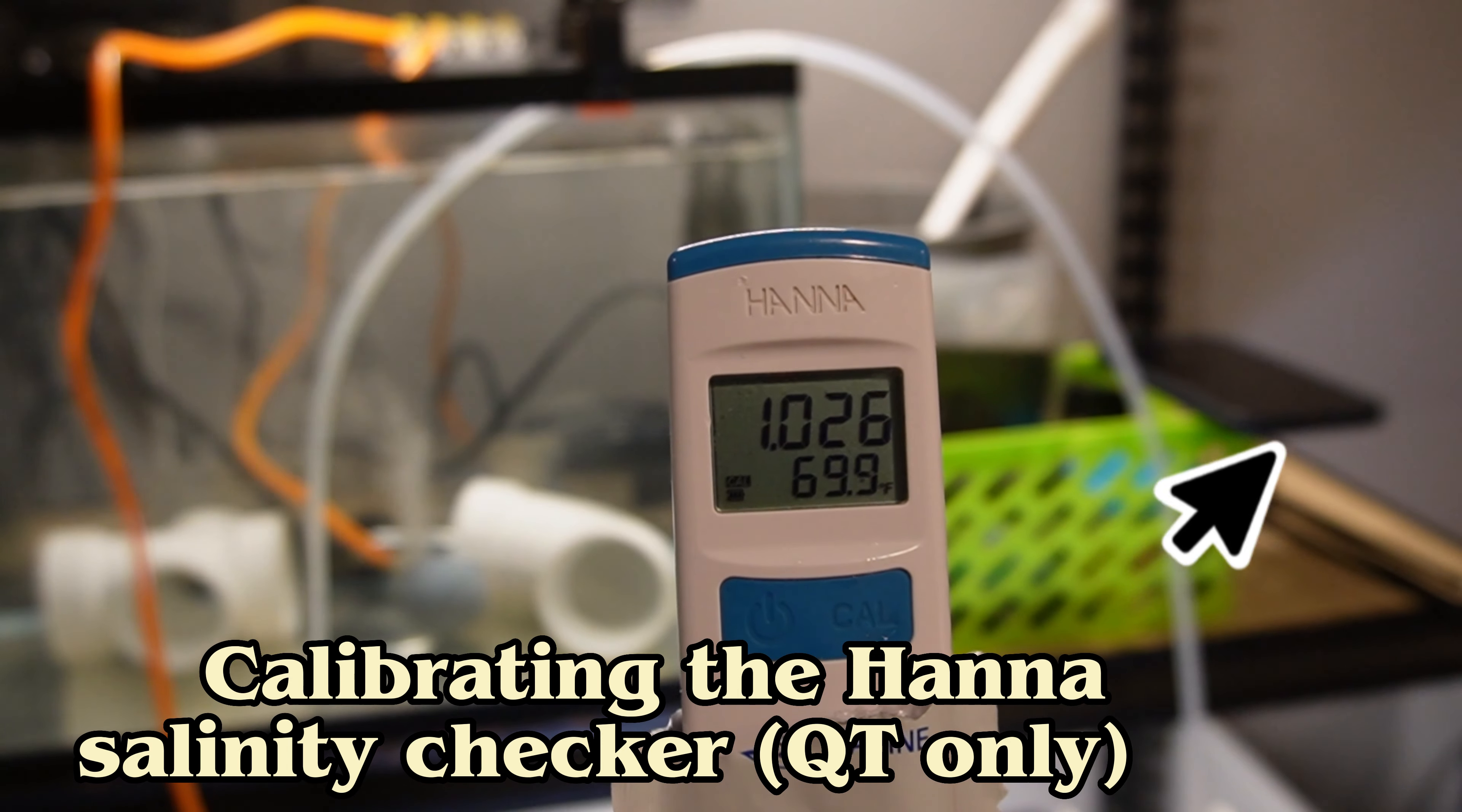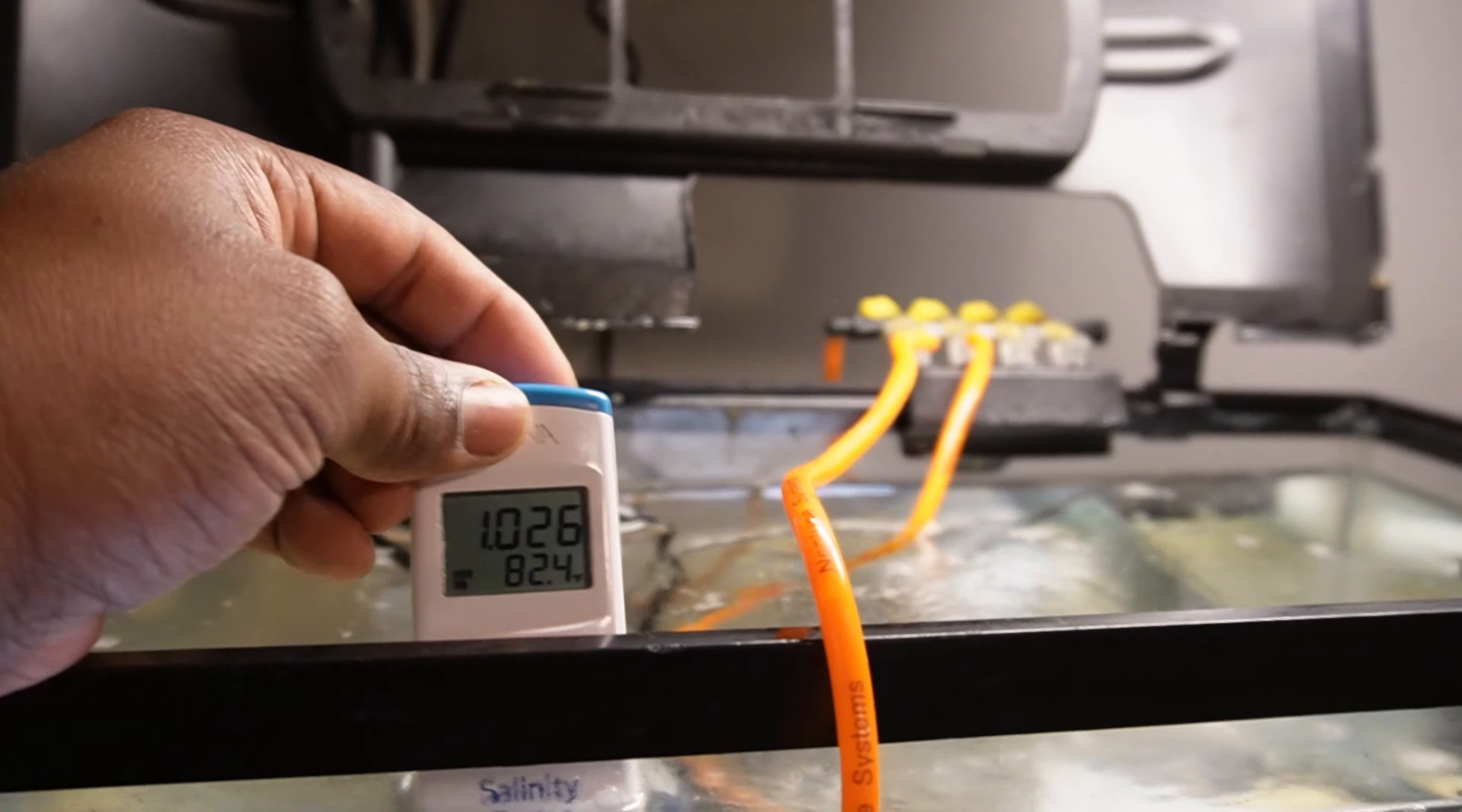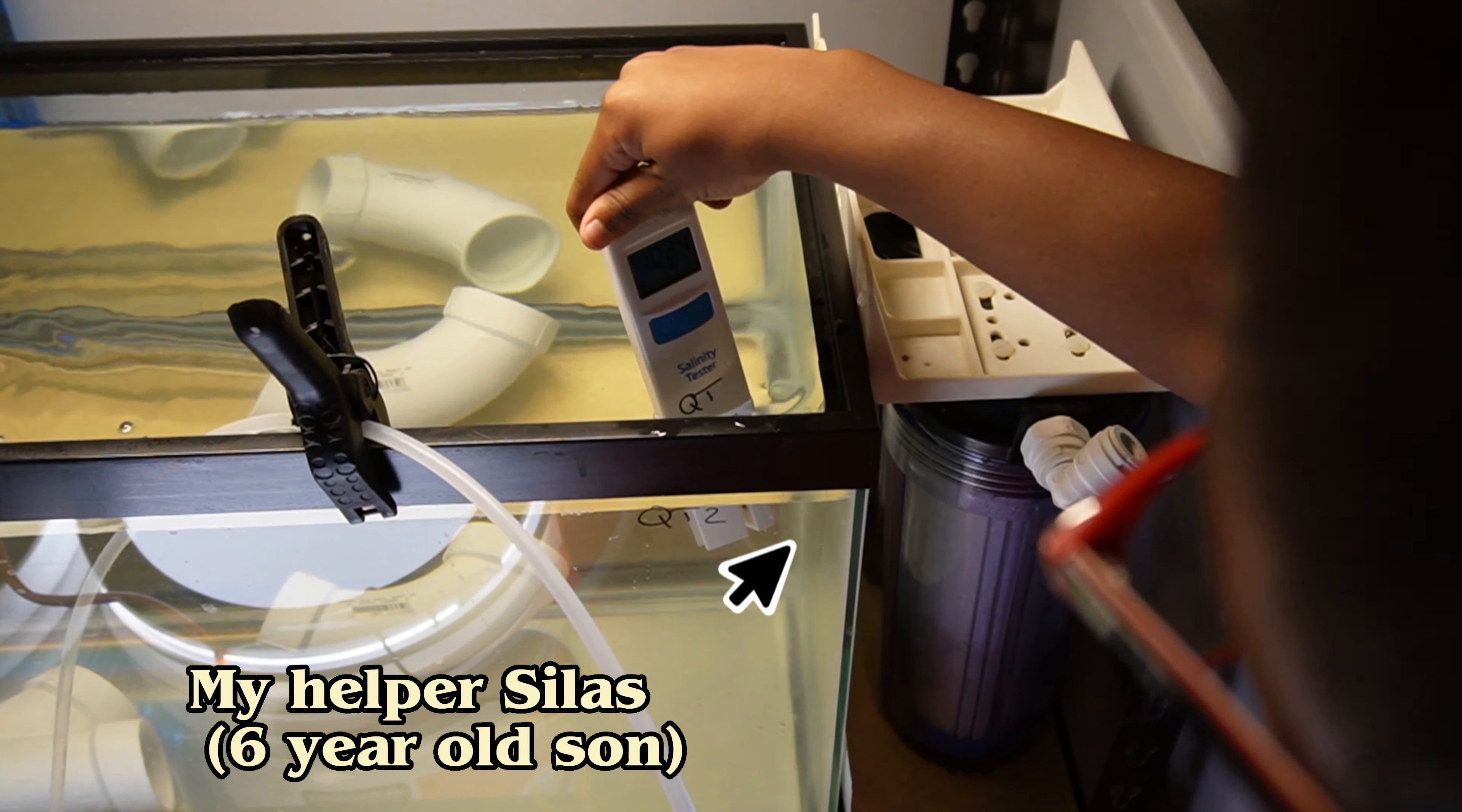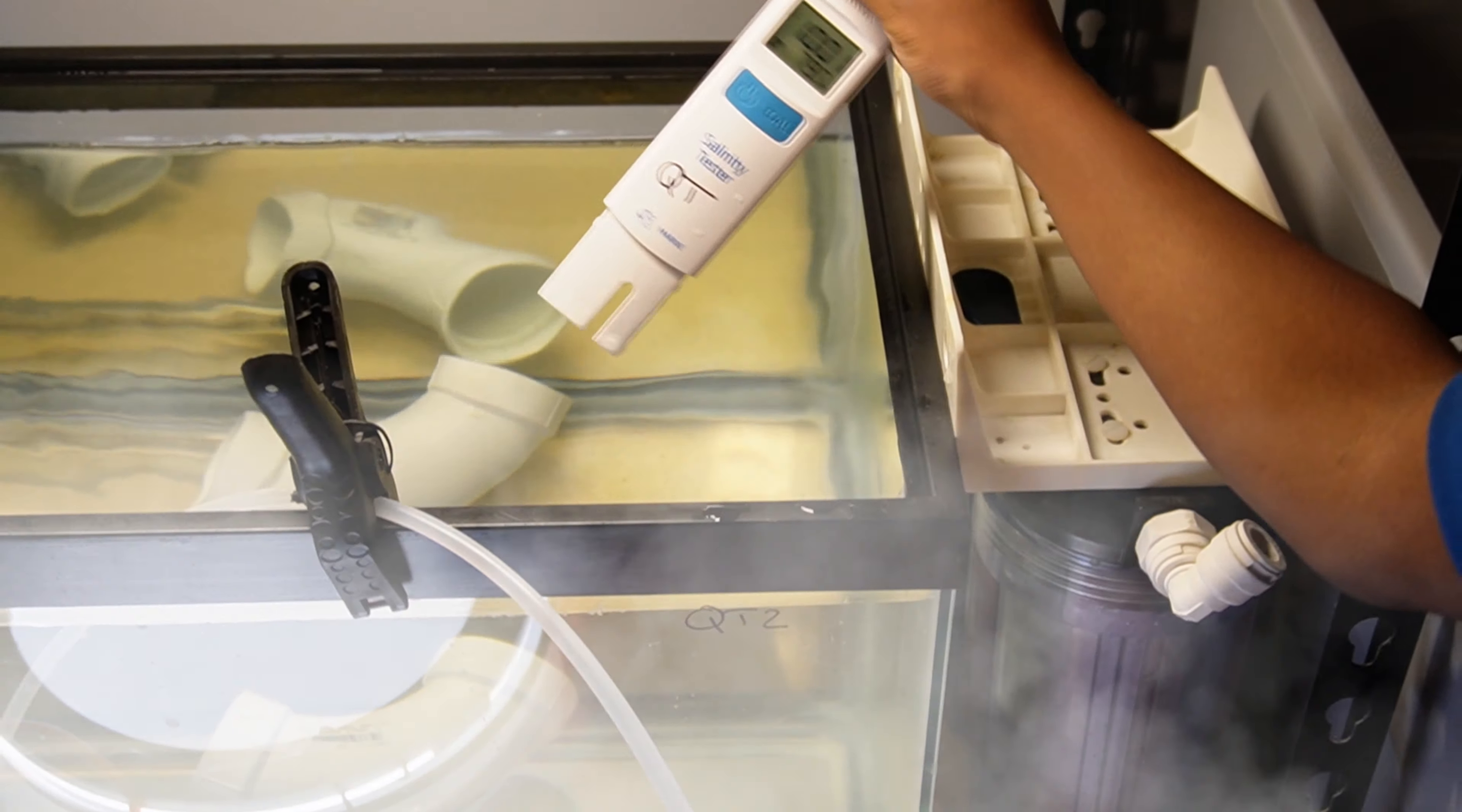This Hannah checker - I lost my original one when I moved, then bought another one and then found it. So this is going to be the QT one. As you can see I labeled it QT. At this moment it was reading 1.026, but I ended up getting it down to 1.024. What's the number say? 10, 24. Okay, 1.024, that's perfect.